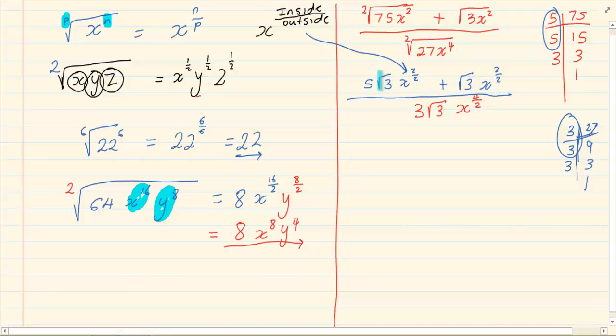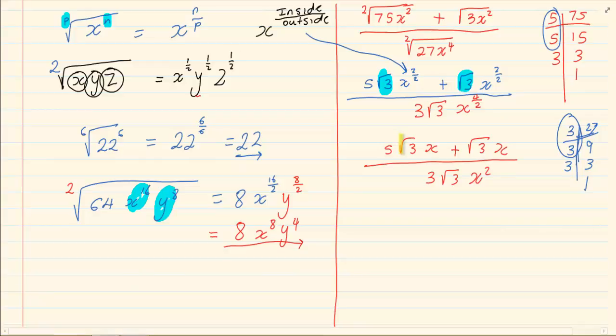Now if you look, 5√3 is like saying 5 apples, there's another √3, and then we've got x to the power 2 and x to the power 2. So what do I actually have? I have 5√3x + √3x all over 3√3x^2. Now what you need to notice is that these terms are the same. It's like saying 5 apples plus 1 apple which gives me 6√3x all over 3√3x^2.